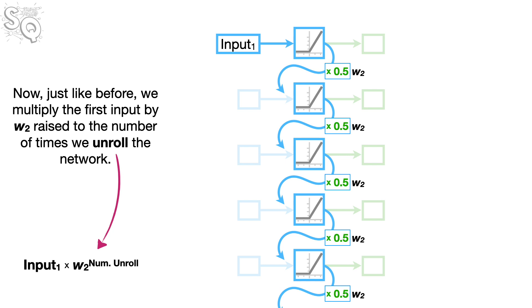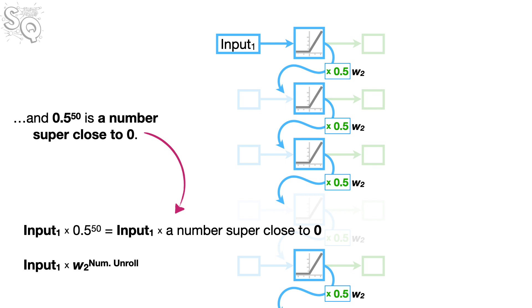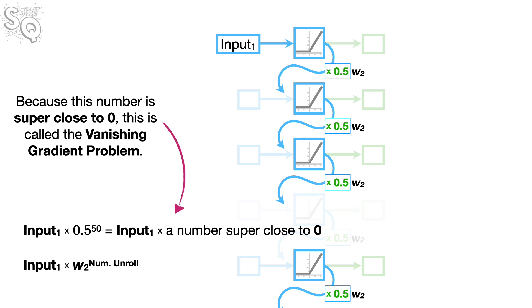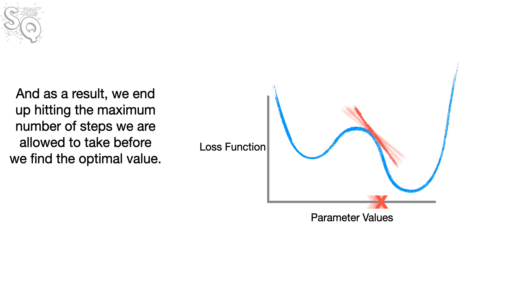Now, just like before, we multiply the first input by W sub 2 raised to the number of times we unroll the network. So if we have 50 sequential input values, that means multiplying input sub 1 by 0.5 raised to the 50th power. And 0.5 raised to the 50th power is a number super close to zero. Because this number is super close to zero, this is called the vanishing gradient problem. Now, when optimizing a parameter, instead of taking steps that are too large, we end up taking steps that are too small. And as a result, we end up hitting the maximum number of steps we're allowed to take before we find the optimal value. Wah-wah!